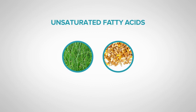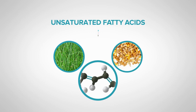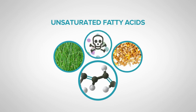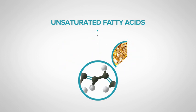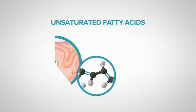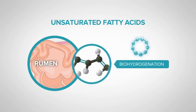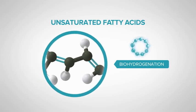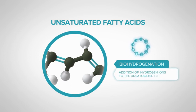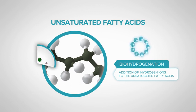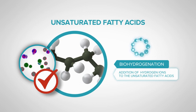Unsaturated fatty acids — that's the fatty acids that contain the double bonds — are actually toxic to many rumen microbes, particularly those that are involved in fibre digestion. In an attempt to detoxify these fatty acids, they undergo a process in the rumen called biohydrogenation. Biohydrogenation is simply the addition of hydrogen ions to the unsaturated fatty acids. The hydrogen ions replace the double bonds, so the fatty acids become more saturated and in doing so are less toxic to the rumen microbes.